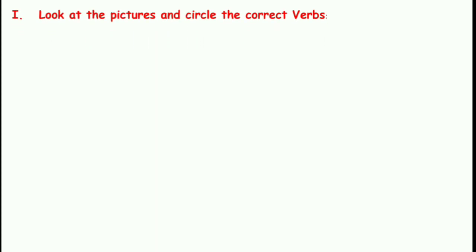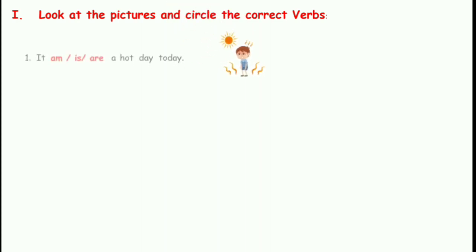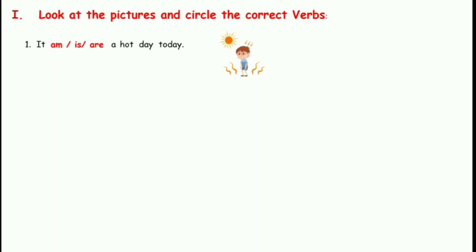Look at the pictures and circle the correct verbs. Here you can see a picture — the sentence has the options am, is and are; you have to choose the correct one and circle it. First sentence: It blank a hot day today. Day is singular and it is also singular, so the correct verb is is. You will be circling is.